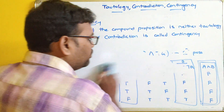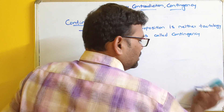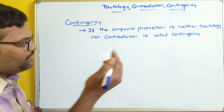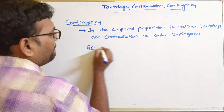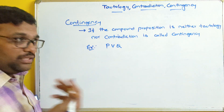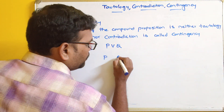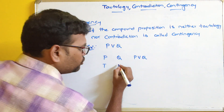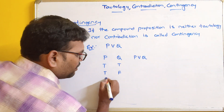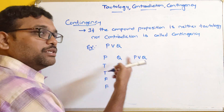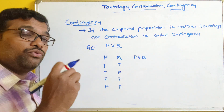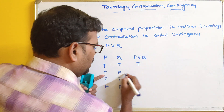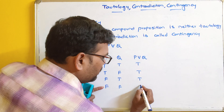For example, let us take P ∨ Q with columns P, Q, P ∨ Q. With two propositions, four possibilities: true/true, true/false, false/true, false/false. The OR operation gives: true, true, true, false. We are getting true for three cases and false for one case.